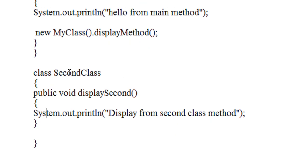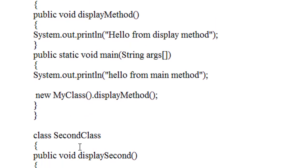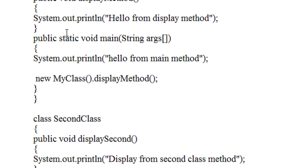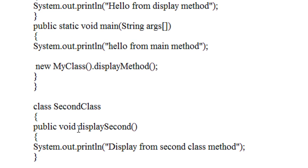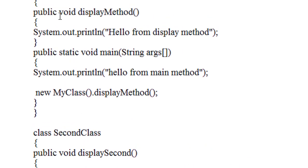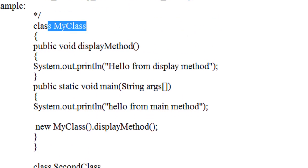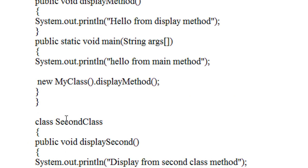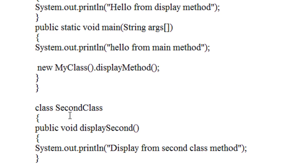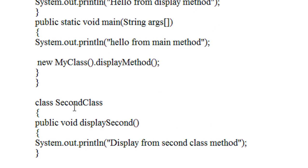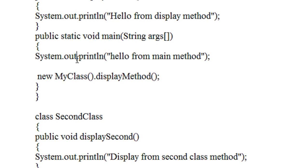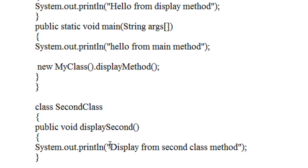This is because there is no connection between these two classes. So in order to connect these two classes, we have to connect them by using the object of the corresponding class. There are two classes present: MyClass and SecondClass. In order to invoke a method inside the second class, you have to create an object of SecondClass in the first class, and by using that object, you have to call the display method.